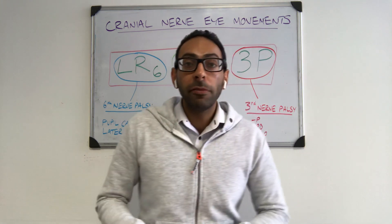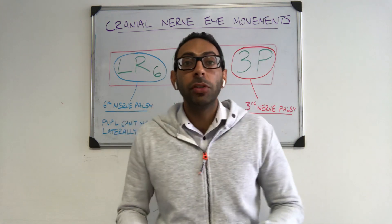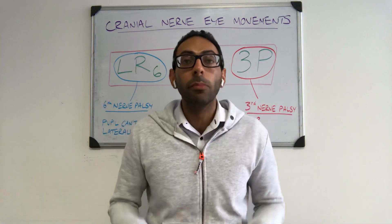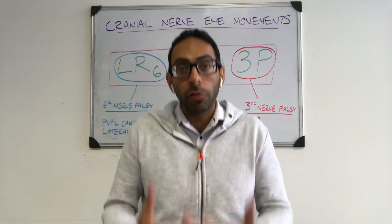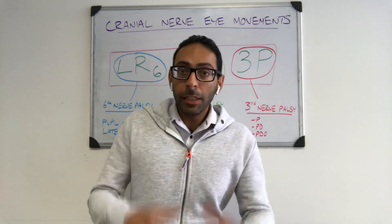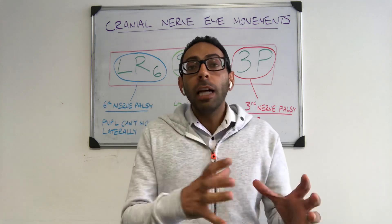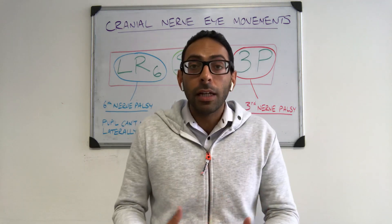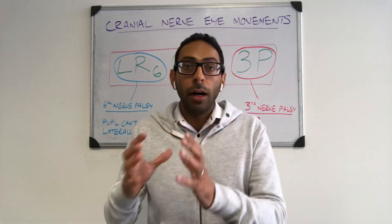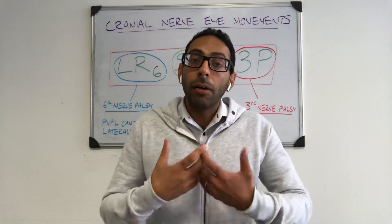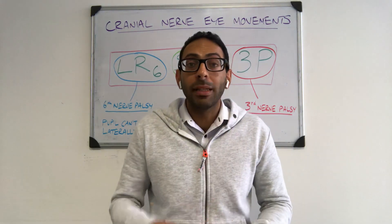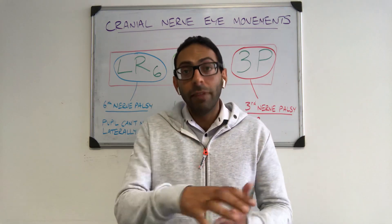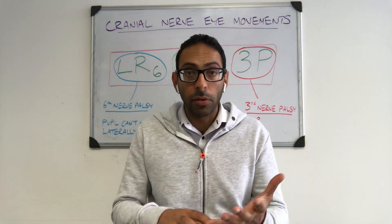Hi guys, another ophthalmology video here. Remember, if you find this video useful, please do subscribe to the channel, like and comment so you get more videos like this one. This video is all about eye movement and the three cranial nerves that we use to move our eyes. Our eye movements are controlled by six extraocular muscles, and these three nerves innervate these six muscles.